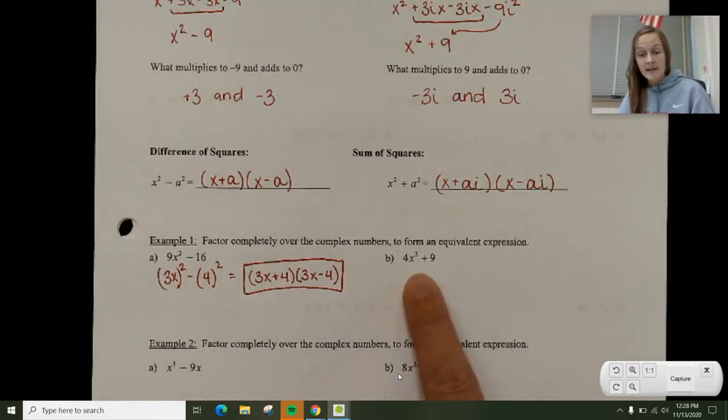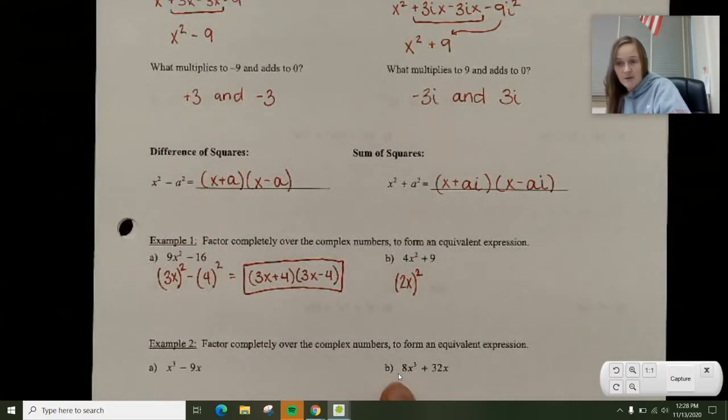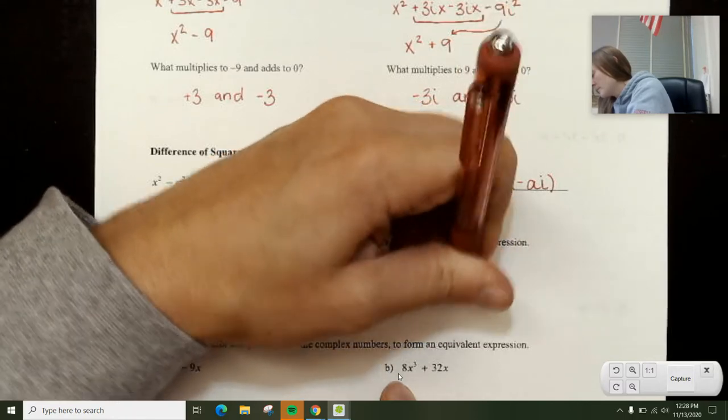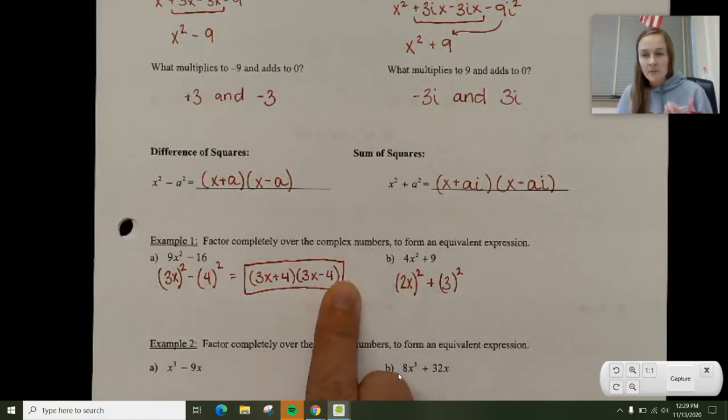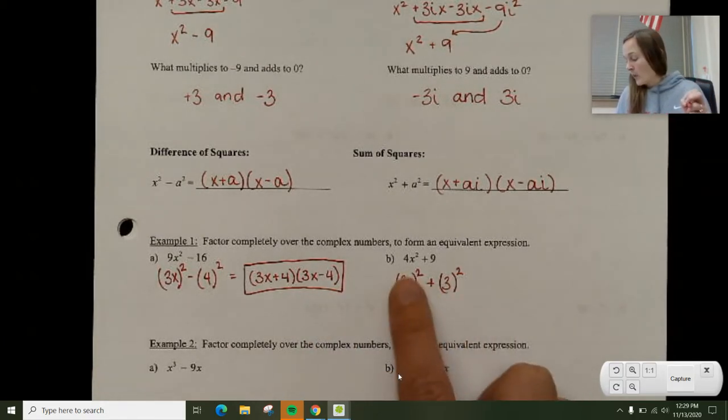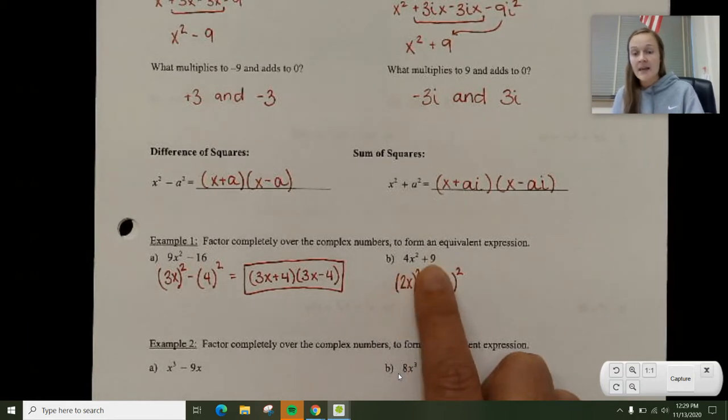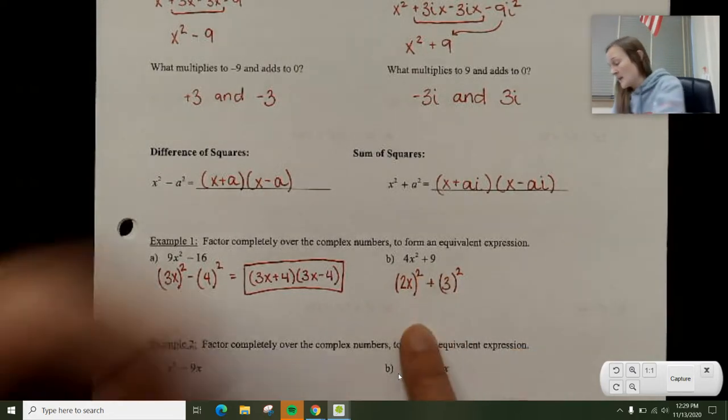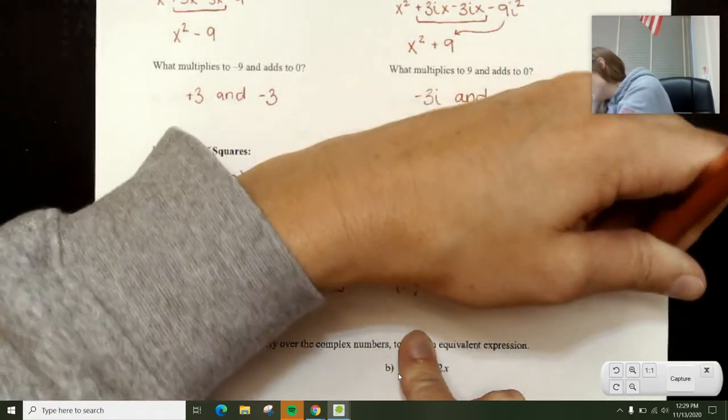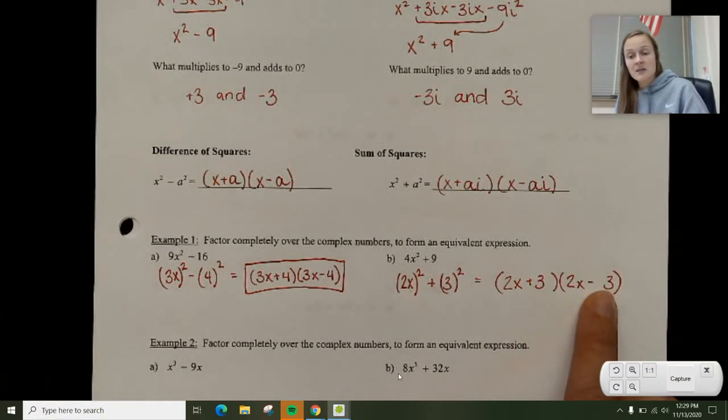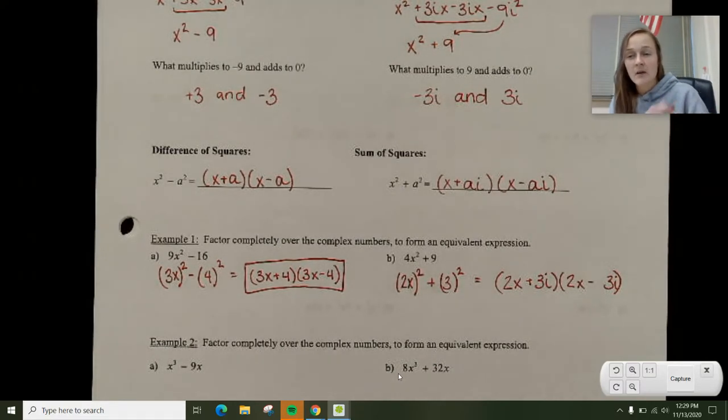For example 1b, I have 4x² + 9. 4x² is a perfect square, it's (2x)², and 9 is a perfect square, it's 3². A lot of people struggle with where do I put the i's. The 4x² is going to be positive because you have a positive times a positive. It's not the first term that changes plus and minus. The second term is where you're going to need the i's to show up. If you had (2x + 3) and (2x - 3), that would give you 4x² - 9. But I need this to turn into plus 9, so I need it to be minus 9i², which means I need those i's right there. It's the second part of it that you include the i's.